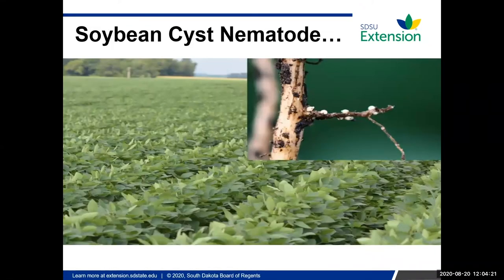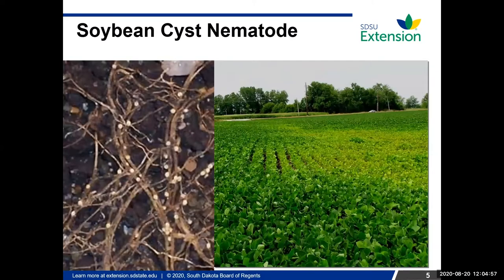When you pull up to a field, everything looks good — that nice uniform canopy, nice green cover, things are looking like you're yielding pretty well — but parts of the field had a little bit of a yield drag during harvest. When you carefully dig up those roots, you can find the female cysts on those roots. This is the 10 to 30 percent yield loss scenario. When SCN gets more drastic and you start to see symptoms, you can have that 30 to 70 percent yield loss.